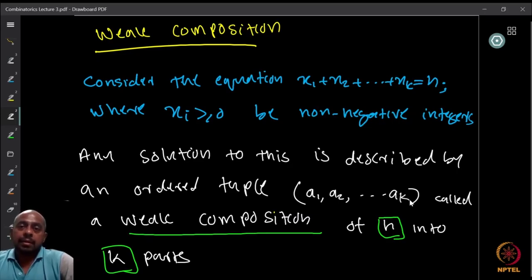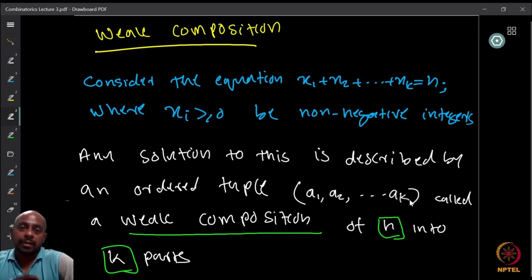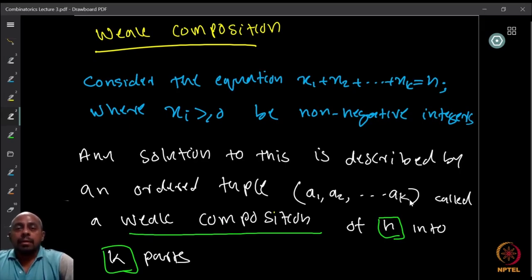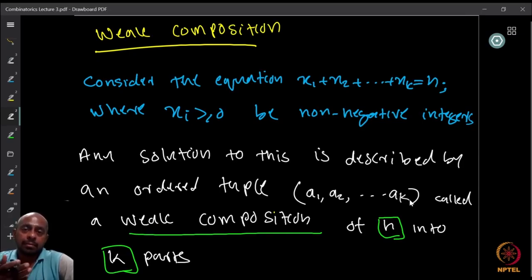We start with a very interesting problem. Consider the equation: summation of x_i equals n, where i ranges from 1 to k — so x1 + x2 + ... + xk = n. The x_i's are restricted to be non-negative integers (they can take values 0, 1, 2, etc.). Any solution can be described as a k-tuple (a1, a2, ..., ak) where a_i is the value taken by x_i.